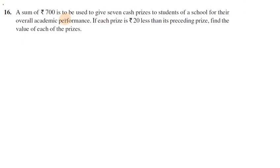Exercise 5.3, question number 16: A sum of ₹700 is to be used to give 7 cash prizes to the students of a school for their overall academic performance. So in a school you have 7 prizes for the sum of 700 rupees.